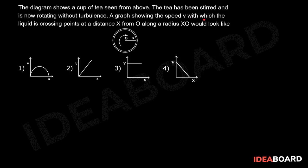A graph showing the speed v with which the liquid is crossing points at a distance x from O along radius XO would look like this. The relative velocity between the liquid and the point of contact with the surface is 0 because of the no-slip condition.